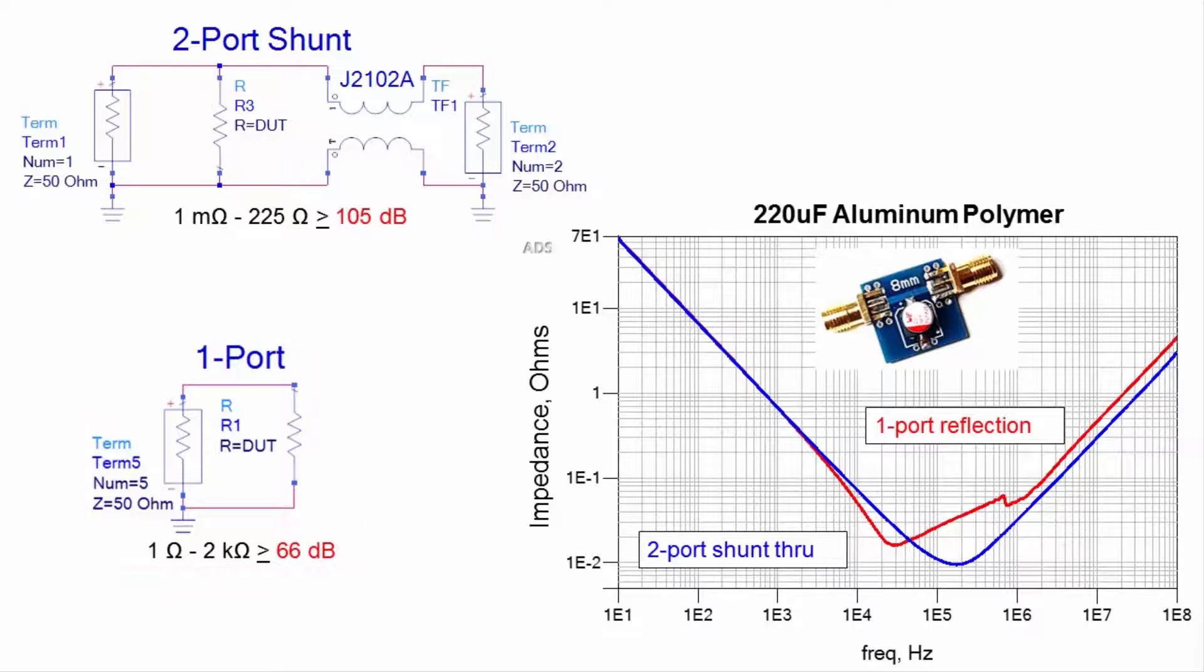A coaxial transformer, like the one shown here, is required when measuring low impedance at low frequencies.